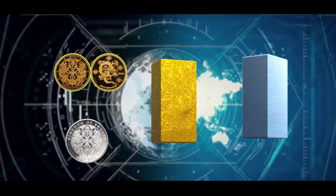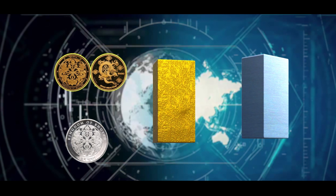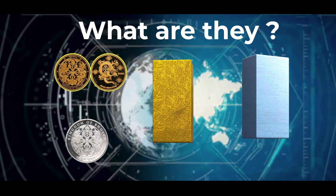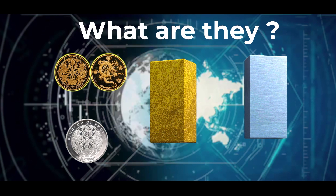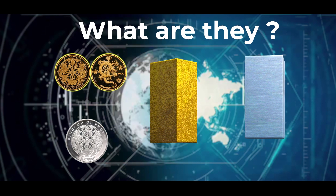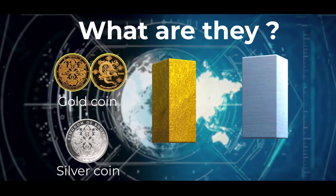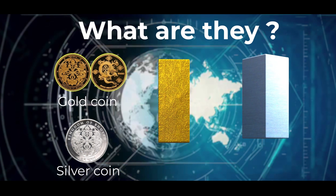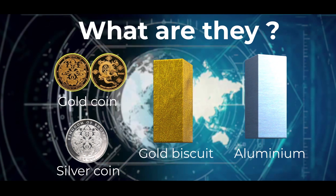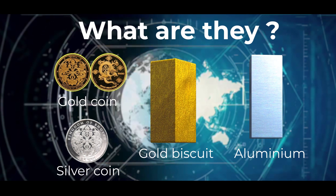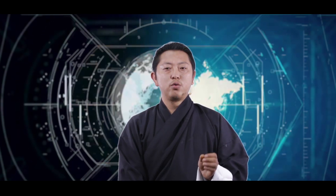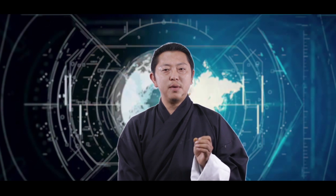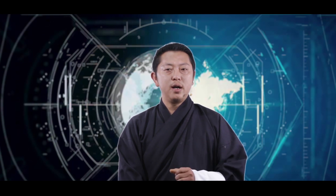Let us look at some more pictures. What do you think they are? They are gold coins, silver coins, wool, and aluminium. They are all elements. So today, we will discuss more about elements, their symbols, and metals and non-metals.